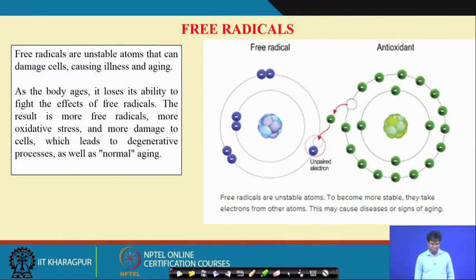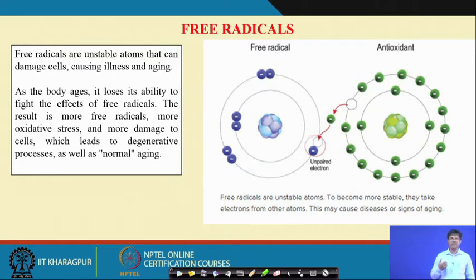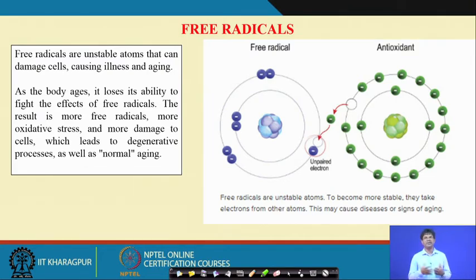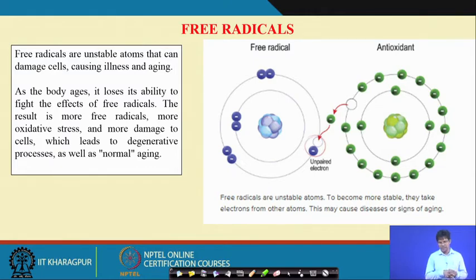The result is more free radicals, more oxidative stress, and more damage to cells, which leads to degenerative processes as well as normal aging. Aging comes because of greater formation of free radicals in the body. Usually you have to take regular intake of natural antioxidants. Japanese people have higher longevity — they take regular green tea, which is a good source of polyphenols as antioxidants. Similarly, AMLA or any natural source of antioxidants taken regularly can minimize the formation of free radicals and the aging problem.